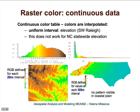However, this approach doesn't work very well when we try to display all of North Carolina. You can see how the elevations are distributed in North Carolina — most grid cells cover the largest area in the coastal plain, where elevations are much smaller than the 500-meter step we would have to use with a uniform interval.